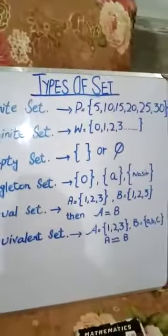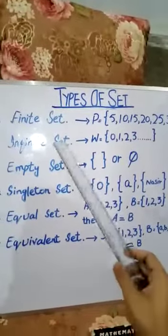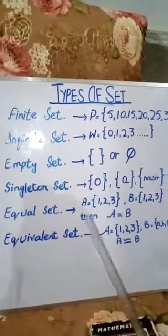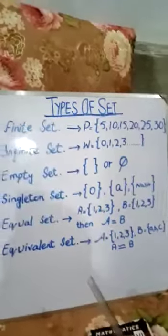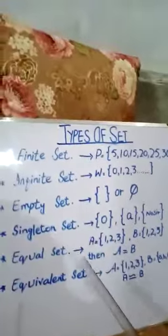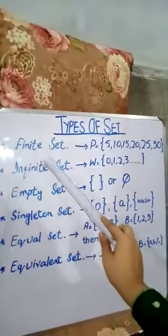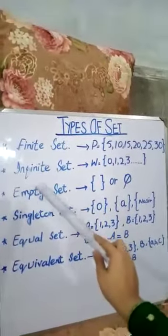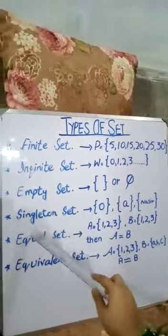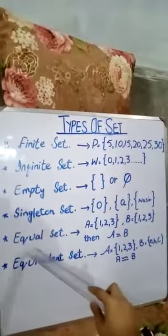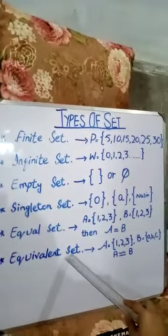There are 9 types of a set, but up to your level we will discuss only 6 types: finite set, infinite set, empty set, singleton set, equal set, and equivalent set.